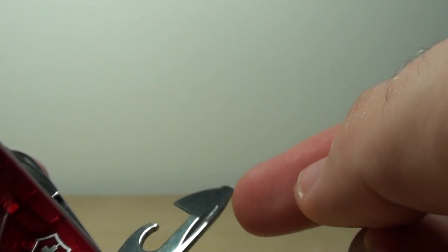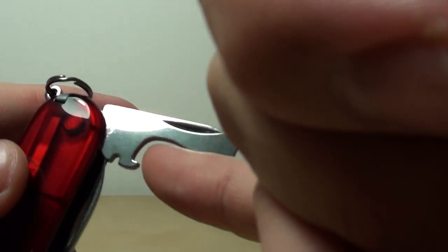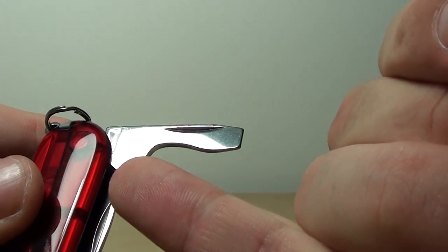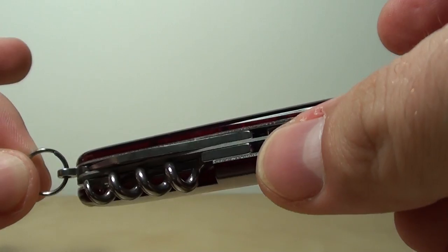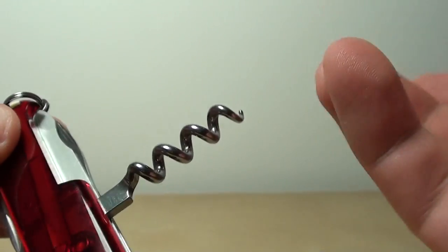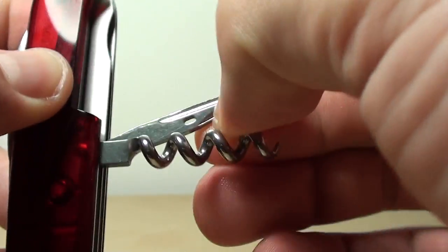And then we have the can opener and the screwdriver, the small screwdriver, Phillips, and then the bottle opener with the big screwdriver and the wire stripper. Then we have the ring here, just to attach to the chain or something. The corkscrew, which works quite well actually, if you use it once or twice you will actually learn how to use it.